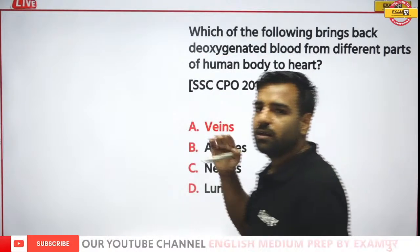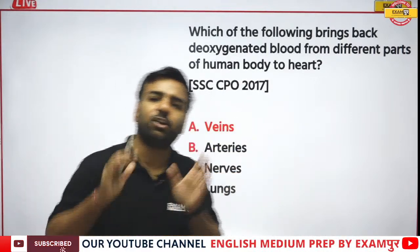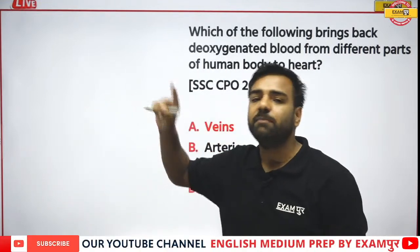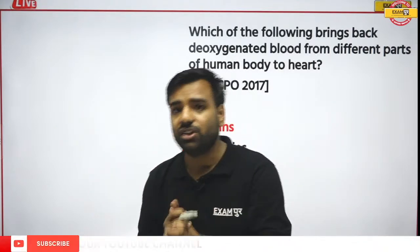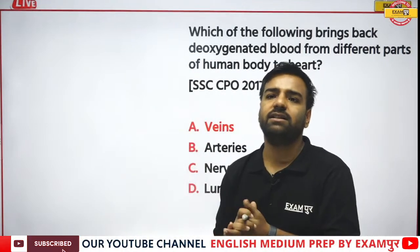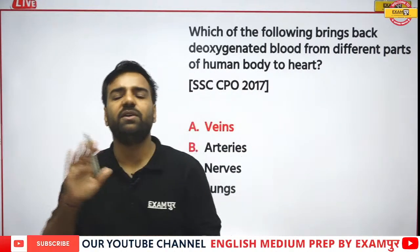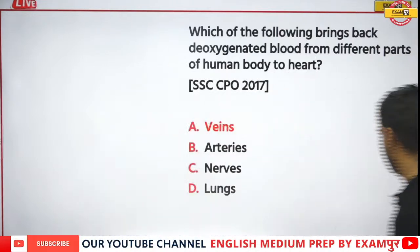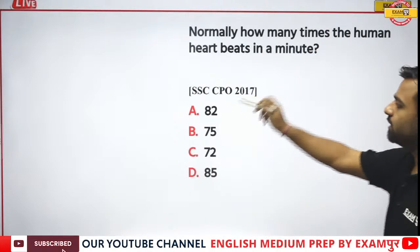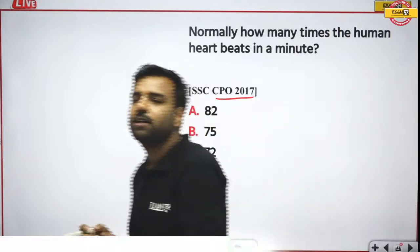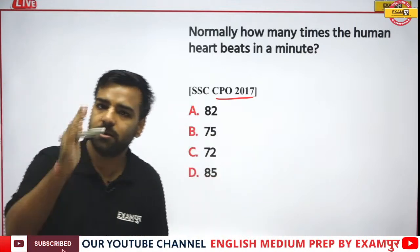We will continue with the theoretical section of human circulatory system in the evening session from 6 to 7, covering CGL previous questions. Homework question: normally, how many times does a human heart beat in a minute? This is from CPU 2017. Please comment your answer after the class. Bye, take care!